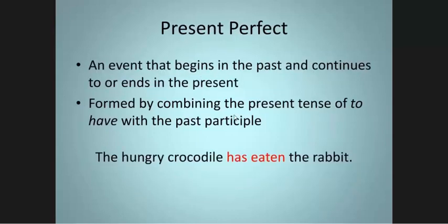Present perfect: we use it especially when an event begins in the past and continues to the present, or just finished now. The formula is by adding have or has plus past participle. 'A hungry crocodile has eaten the rabbit'—singular, we use has plus verb 3.